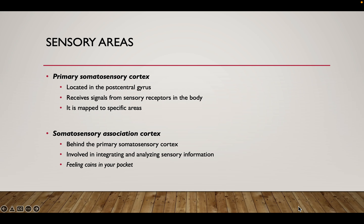We're going to pick up here with part three. In part two we talked a lot about motor areas — we talked about Broca's area, the primary motor cortex, and the premotor area. These are all having to do with motor signals originating in the brain and traveling out via efferent neurons away from the central nervous system and out to some effector tissue, some effector cell, or some muscle.